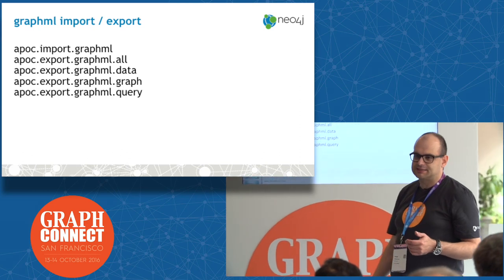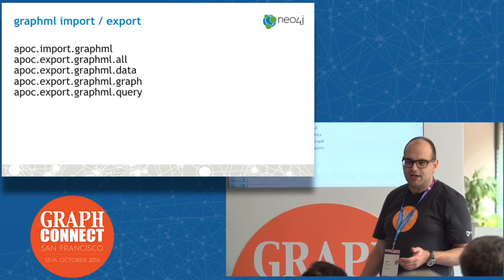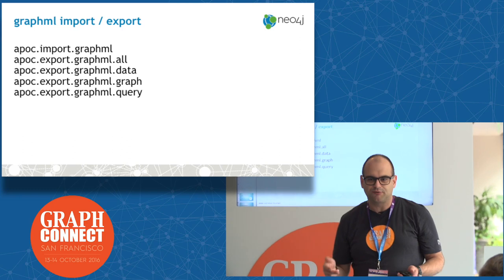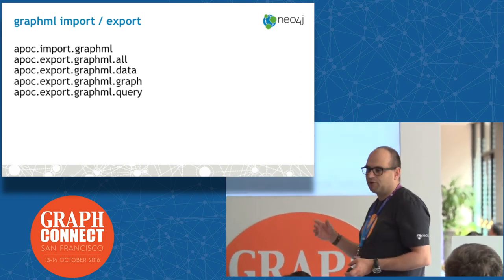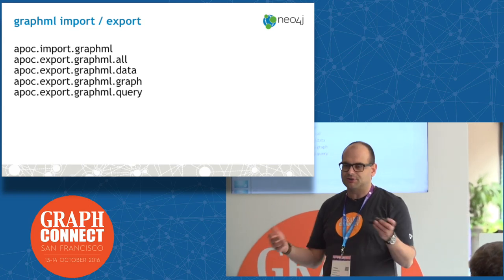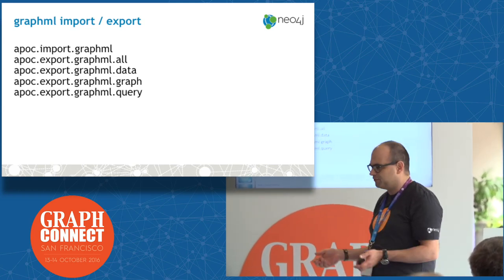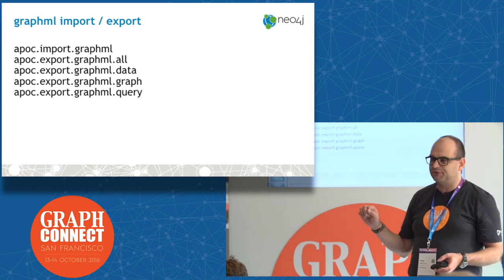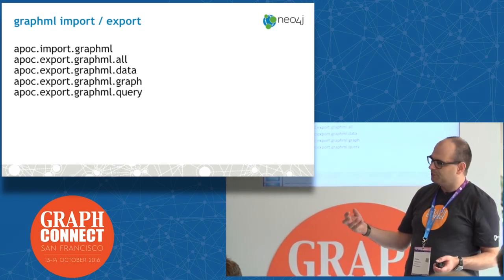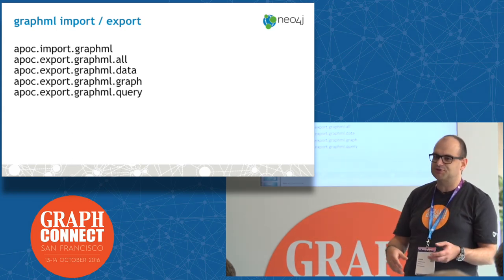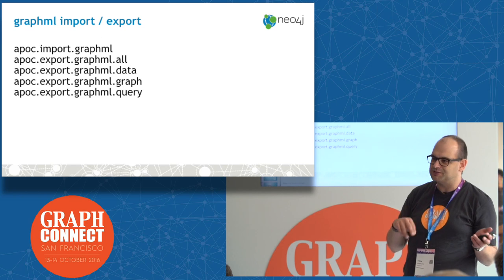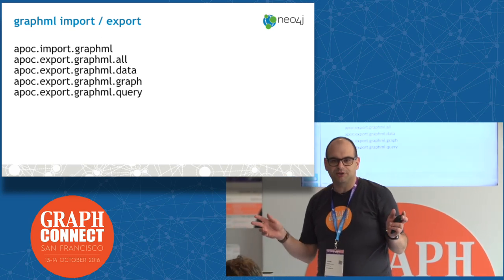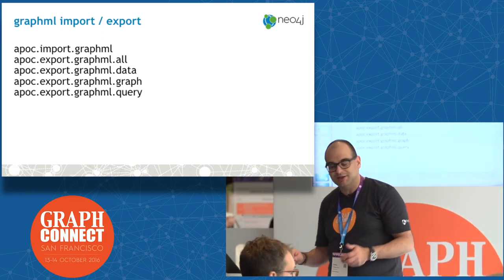Regarding GraphML — GraphML is a kind of standardized data exchange format, and we support one procedure that allows you to import GraphML data. There's also a bunch of features that allow you to export either the full graph or parts of it based on a Cypher query or a given path, which basically writes a file on the server. Currently there's no easy way to get the file content as a download, because it's embedded in Cypher, so you always need to write a file somewhere on the file system of the server.